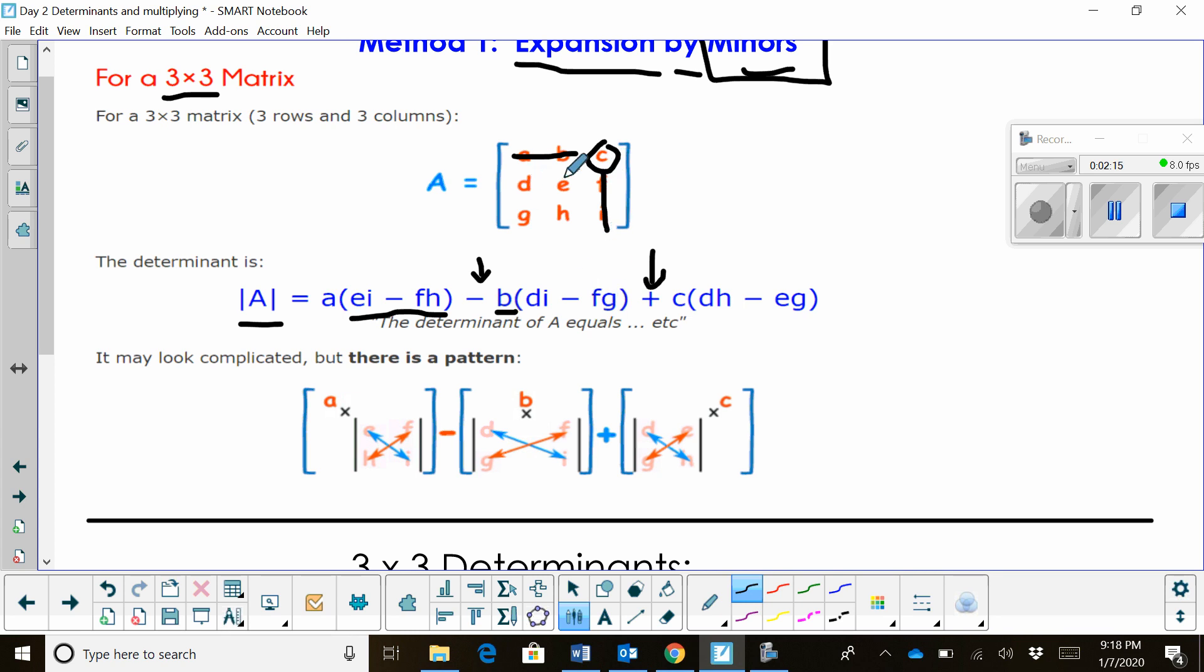We then find the determinant by taking D times H minus E times G. And that is the last portion. So that is how you find the determinant of a 3 by 3 matrix using minors.